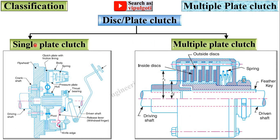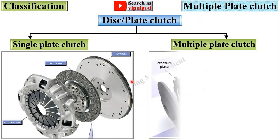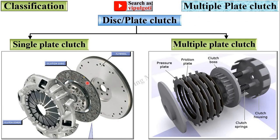The disc clutch or plate clutch is basically divided into two types: single plate clutch and multiple plate clutch. In this video we are going to focus on multiple plate clutch. In a single plate clutch, only a single plate is used, whereas in a multiple plate clutch, a number of plates are used, as you can see from the figures.